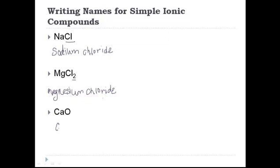CaO: CA is calcium. And then O, oxygen, is the anion. So instead of oxygen, we're going to write oxide.